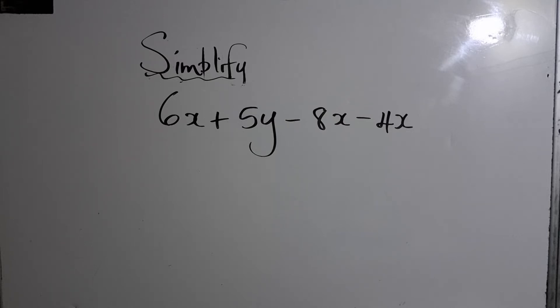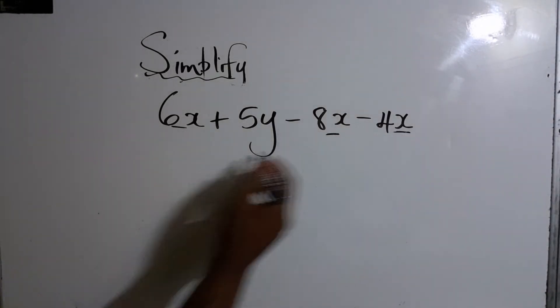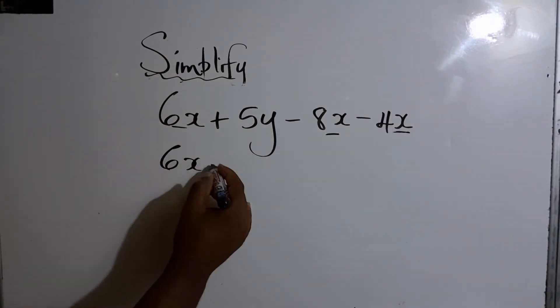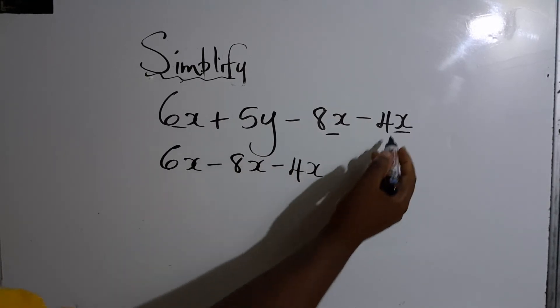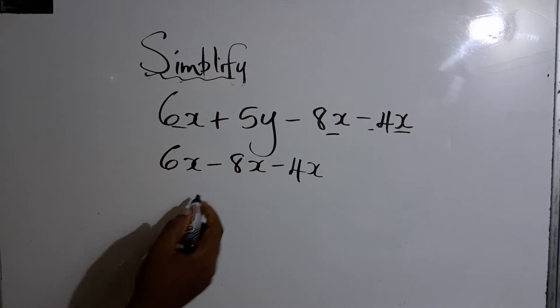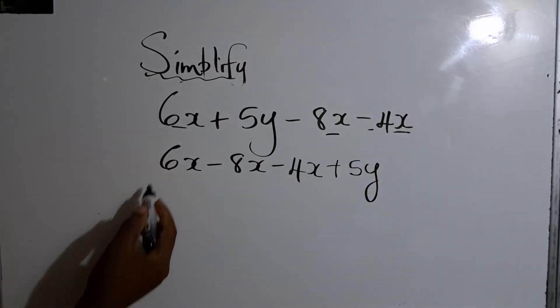All right, so first we're going to do the like terms. So we're going to bring all our X's together. So it would be 6X minus 8X minus 4X. Notice whatever sign is in front of it, you have to bring that too plus 5Y.